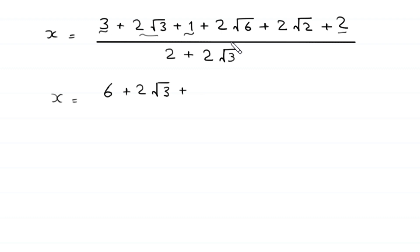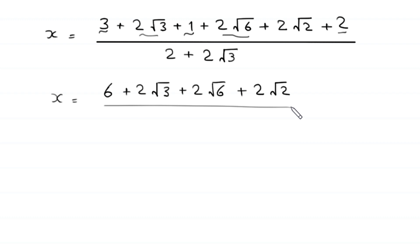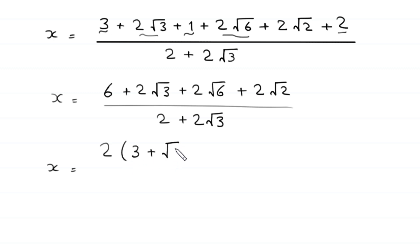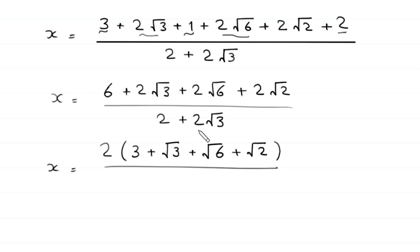Continuing, we have 2 times root 6 plus 2 times root 2, divided by 2 plus 2 times root 3. Next, x is equal to: from the numerator we can factor out 2, leaving in brackets 3 plus root 3 plus root 6 plus root 2, divided by from the denominator we can factor out 2, leaving in brackets 1 plus root 3.